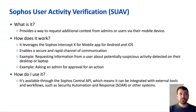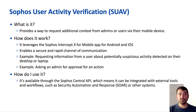The early access program is called SoPos User Activity Verification. What it does is provide a way to get additional context from admins or users through their mobile devices. It works through the Intercept X for Mobile app on either Android or iOS, and it establishes a secure and rapid channel of communication between that device and SoPos Central.